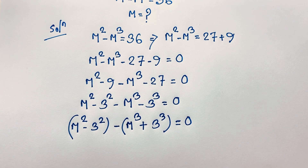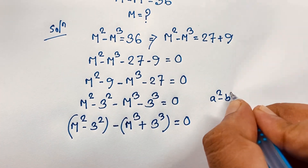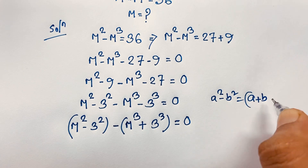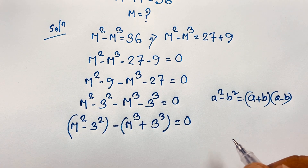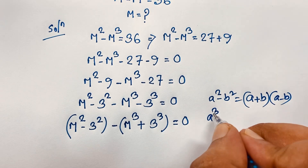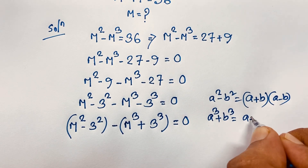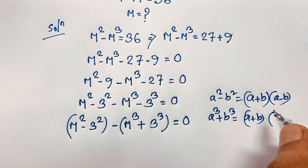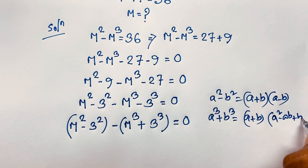Now we will find two identities. It will be: a squared minus b squared equals a plus b times a minus b. Then here a cubed plus b cubed equals a plus b times a squared minus ab plus b squared.